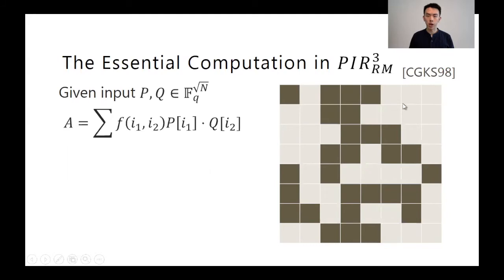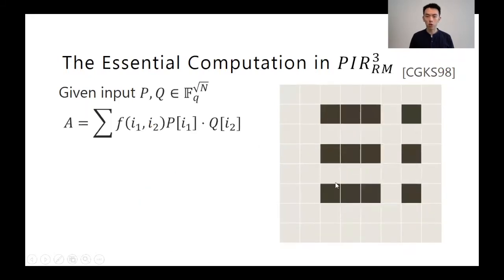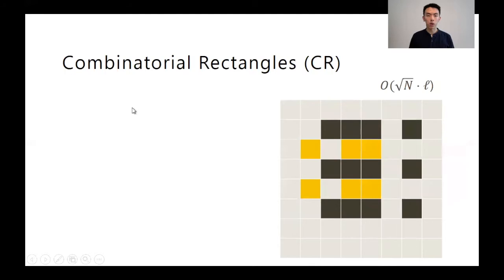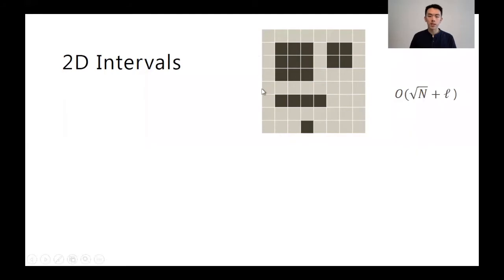To understand how the shortcut works, let's look at how the evaluation maps are defined in the three-server Reed-Muller PIR. The scheme treats the truth table as a 2D square and is given two vector variables each of dimension square root N. It has to compute a degree-two polynomial where each monomial corresponds to the entry at row i1 and column i2, and each monomial is multiplied by an extra coefficient that is the value of the function on that point. At the end, it sums over every entry, giving an evaluation time of capital N. It is natural to consider combinatorial rectangles because they are regular shapes. For a combinatorial rectangle, we can factor out the polynomial and compute by sum-then-multiply, which takes square root N time — a huge improvement over the original N time.